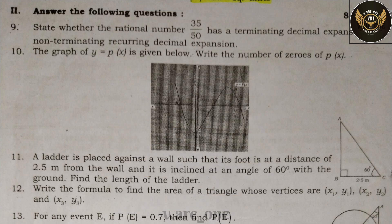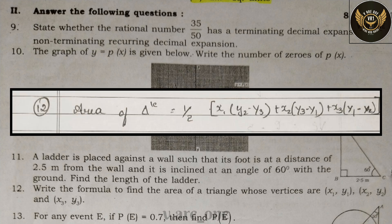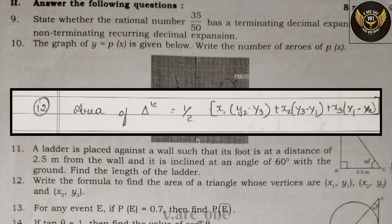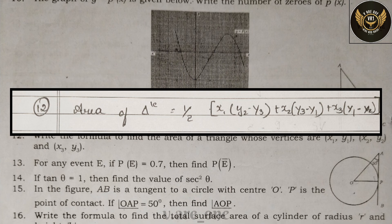Twelfth one: write the formula to find the area of a triangle whose vertices are (x₁, y₁), (x₂, y₂), and (x₃, y₃). Area of triangle = ½ × |x₁(y₂ − y₃) + x₂(y₃ − y₁) + x₃(y₁ − y₂)|.